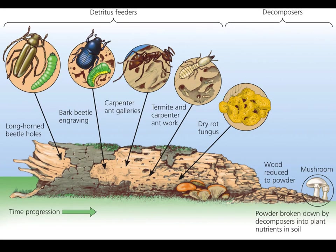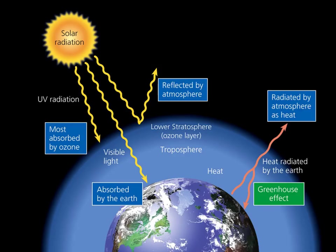Second on the list is the cycling of matter. The Earth isn't growing or shrinking, so there's a fixed supply of materials to work with. Nutrients that are taken from the environment to be part of living organisms are eventually going to be returned to the environment, and there's a whole army of organisms that help this process occur. In a nutshell, the environment is governed by the law of conservation of matter.